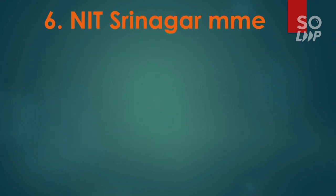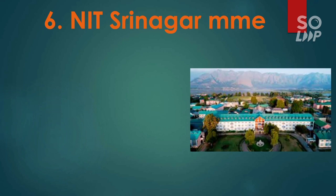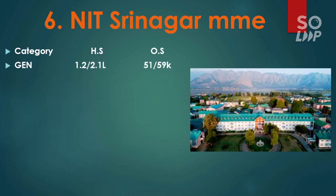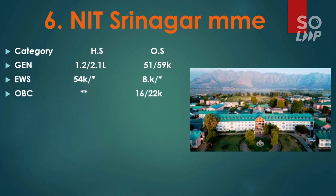The sixth is NIT Srinagar, where Metallurgical and Materials Engineering has the lowest cutoff. For General other state, it is 51,000 and 59,000 for male and female — scoring around 95 percentile as a General other state student should get you in. For EWS, it is 8,000. For OBC, it is 16,000 and 22,000. For SC, it is 9,500 and 12,000. For ST, it is 3,600.